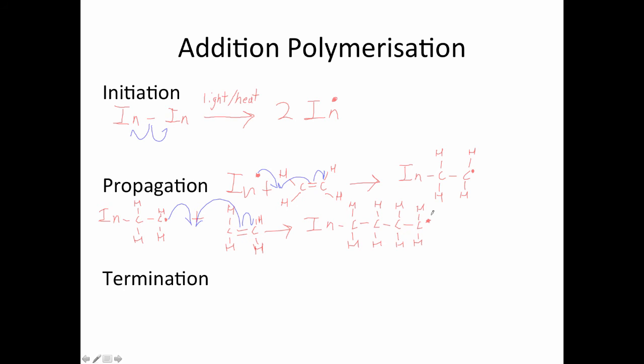Now eventually, two of these ends here, these radical ends, will eventually meet. This is what we call termination. There's a few ways this could happen. The first is if it meets another radical produced from the initiation reaction.